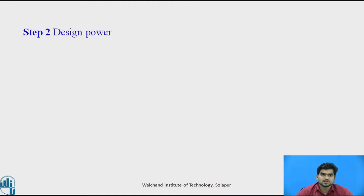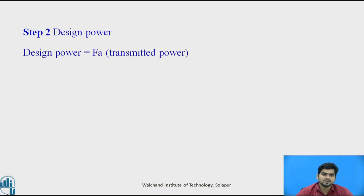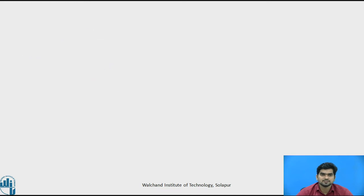Step 2 is to find out the design power for the V-belt. The design power for the V-belt is calculated using the equation: FA multiplied by transmitted power. The FA value is 1.2 and the transmitted power is 5 kilowatt. So the design power is equal to 6 kilowatt.